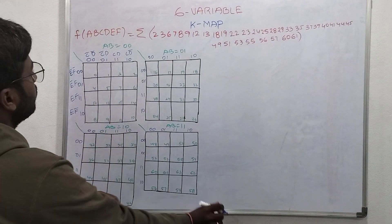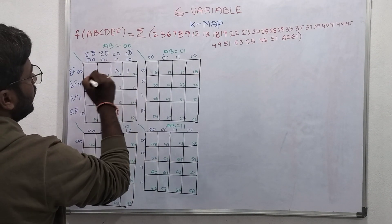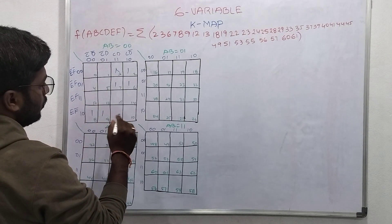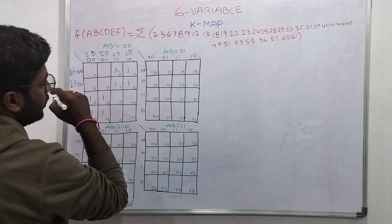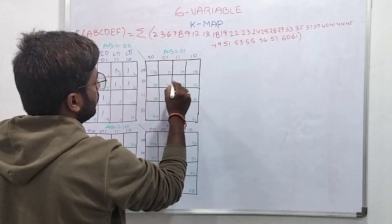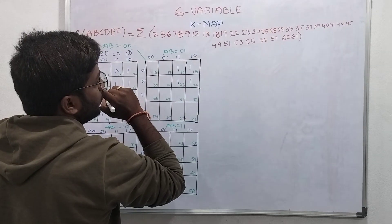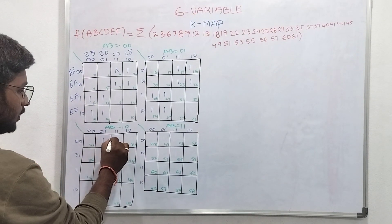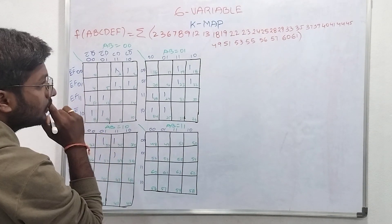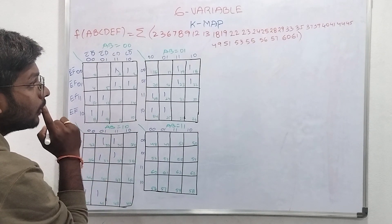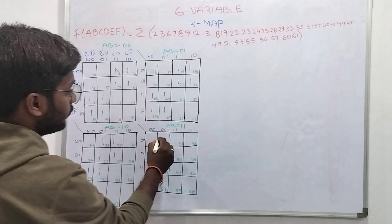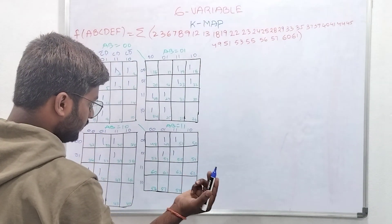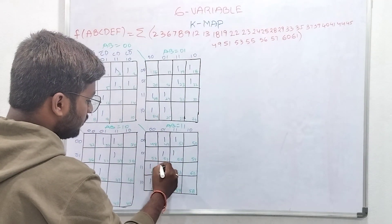We will put the bits inside. The minterms are: 2, 3, 6, 7, 8, 9, 12, 13, 18, 19, 22, 23, 24, 25, 28, 29, 33, 35, 37, 39, 40, 41, 44, 45, 49, 51, 53, 55, 56, 57, 60, 61.